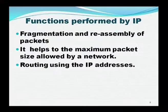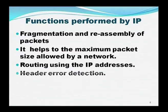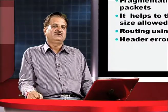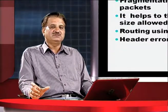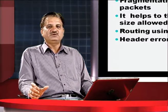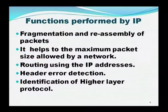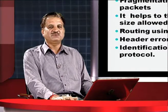Routing uses IP addresses. Routing is a process used by IP to ensure which is the optimum path for the entire transmission. Header error detection — if the IP address of the information to be transmitted contains some error, the IP address mechanism processes it to ensure whether there is any error or not. Identification of the higher-level protocol — what the next protocol will be is also identified by the IP address.